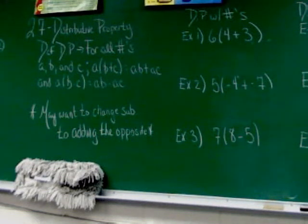We start with the definition of the distributive property. For all numbers A, B, and C, A parentheses B plus C close parentheses is equal to AB plus AC, and A parentheses B minus C close parentheses equals AB minus AC.